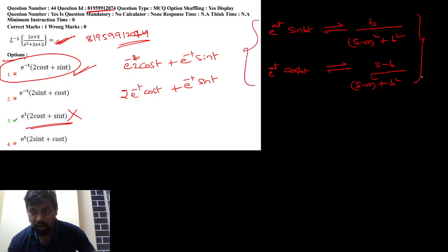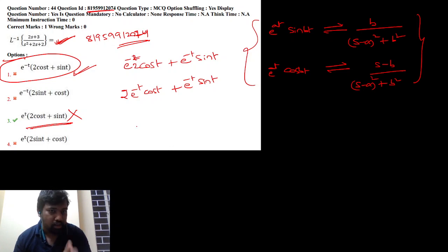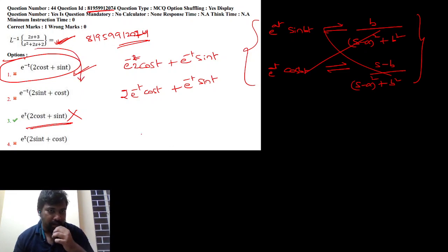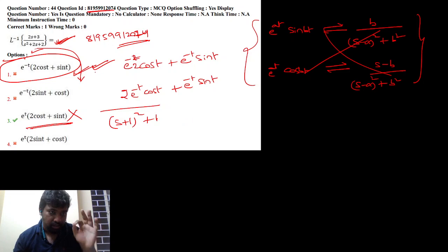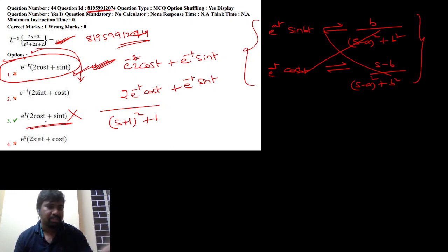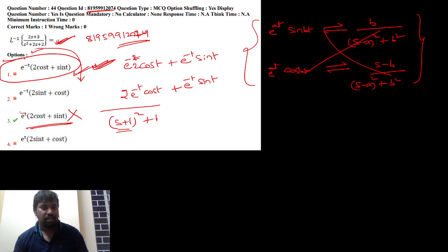Maybe I have a mistake; if you have an explanation, leave a comment. I have the exact solution. We have to do S plus 1 whole square plus 1. That's the right form. Option A is correct. Option C is obviously wrong — if you put S+1, there should be minus T, not plus T. So the answer is correct for this question.